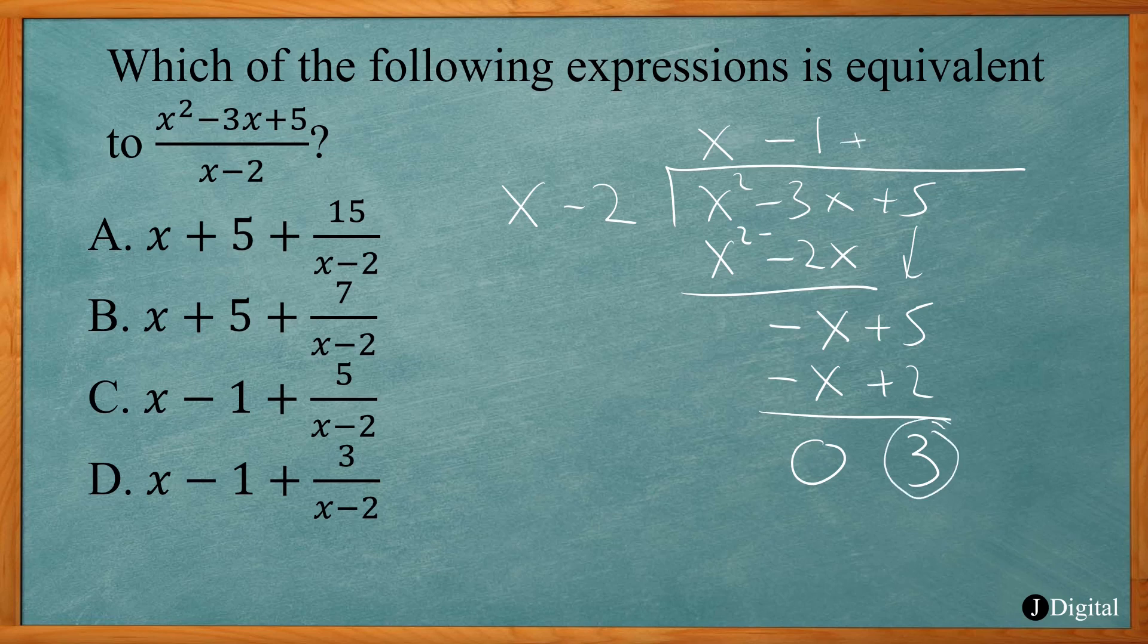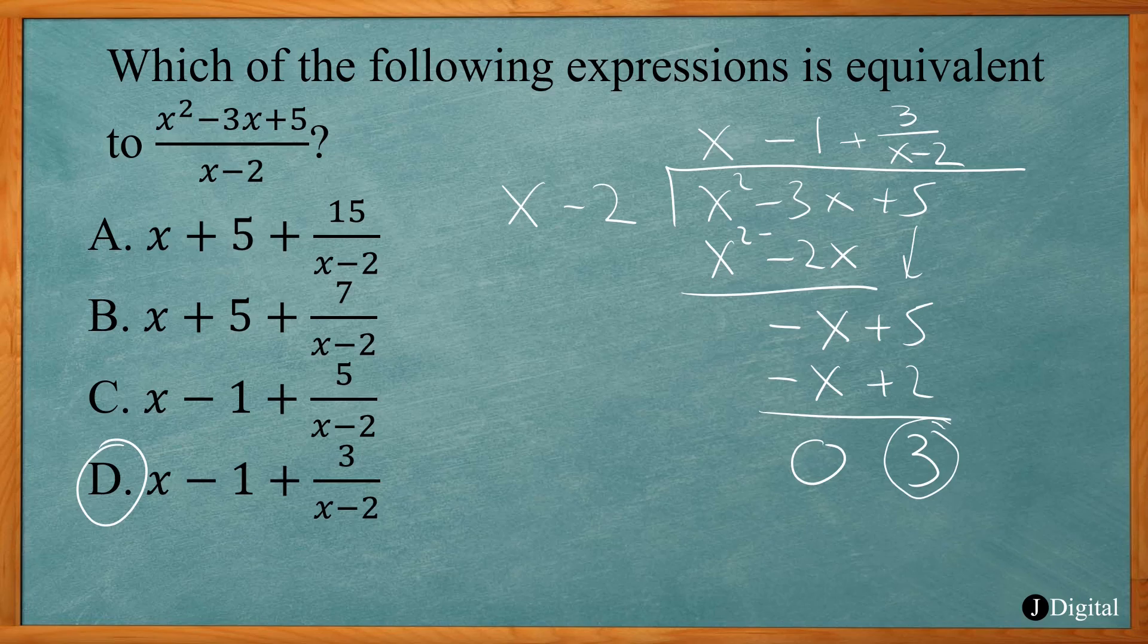And then you write that over what you were dividing by, so x minus 2. So our answer is x minus 1 plus 3 over x minus 2. That's going to be answer choice D. This was an example of an SAT problem dealing with polynomial division.